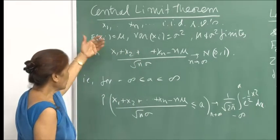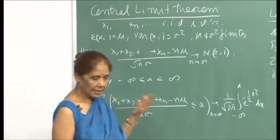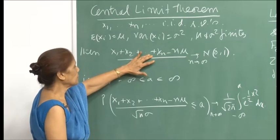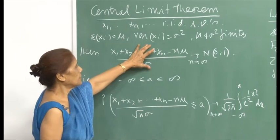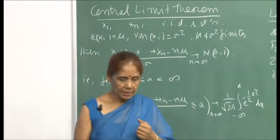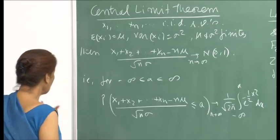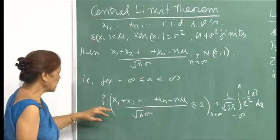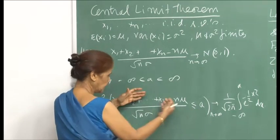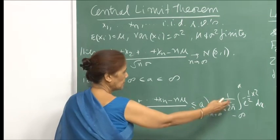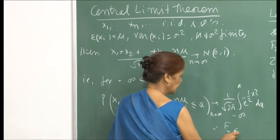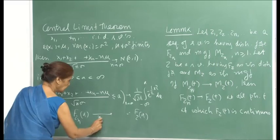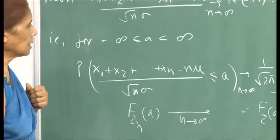That means, no matter what the original distribution of the x_i's was, when you take the sum and let n go to infinity, this random variable will converge to the standard normal variate. This is convergence in distribution. In other words, for any finite number a from minus infinity to infinity, the probability of this standardized random variable being less than or equal to a converges to the standard normal CDF. So F_{Z_n}(a) converges to F_Z(a) as n goes to infinity.